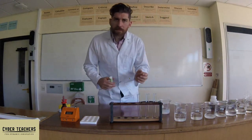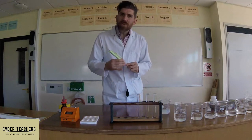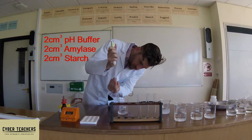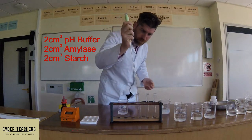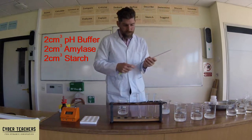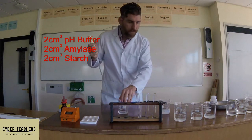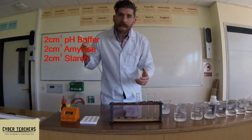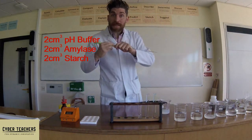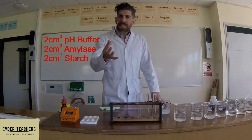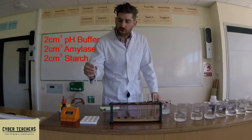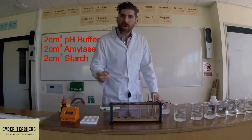The setup is quite simple: take two centimetres cubed of each solution. First, measure two centimetres cubed of buffer, then with a clean pipette take two centimetres cubed of the amylase solution. Change to another clean pipette. At this stage you also need a clean pasta pipette ready, because you'll use it to extract one drop at a time every 30 seconds and drop it onto one of the iodine drops in your spotting tile.